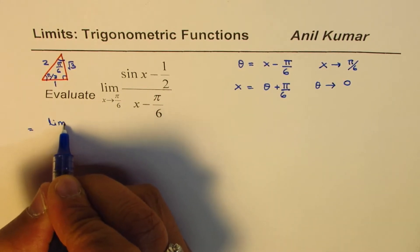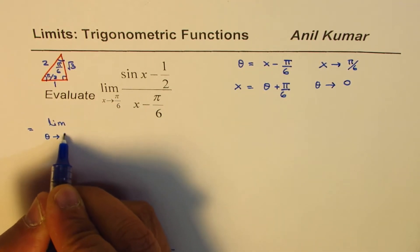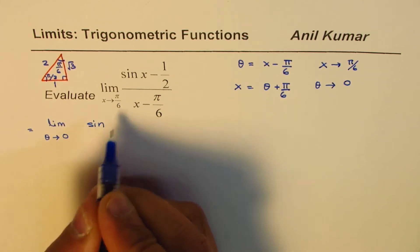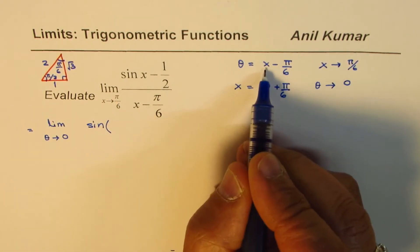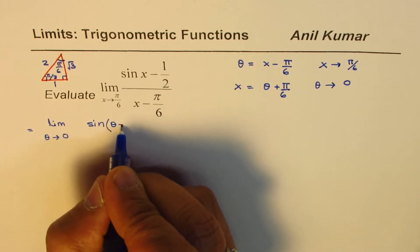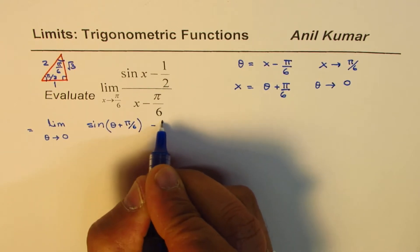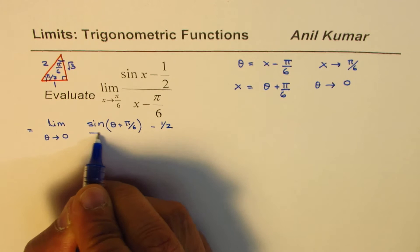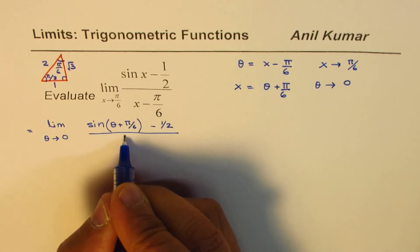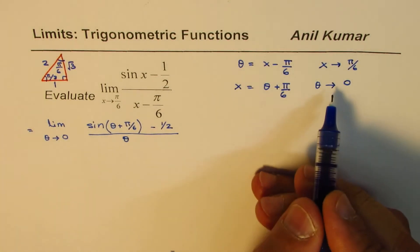With that substitution, we can rewrite the limit: instead of x approaching π/6, it becomes θ approaching 0. The numerator becomes sin(θ + π/6) - 1/2, and the denominator becomes θ.